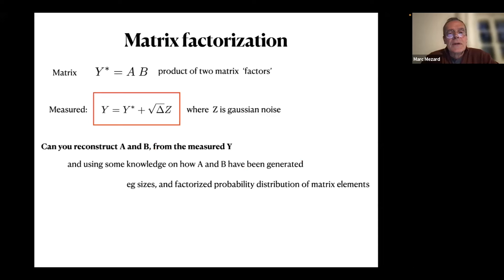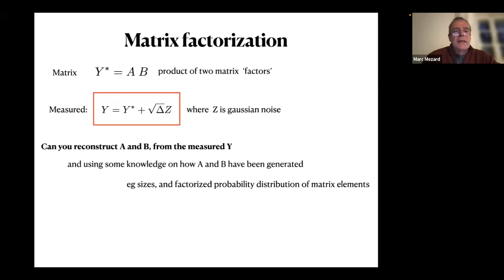The problem itself can be stated relatively easily. Imagine that we have a large matrix which is a product of two factors: Y equals A times B. Y-star is the matrix that you would like to find. What you have is a measurement Y, which is equal to Y-star plus some noise. Here I'm keeping to a simple case where we just have additive Gaussian noise.